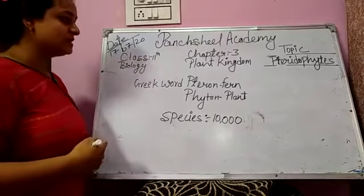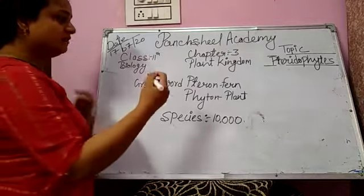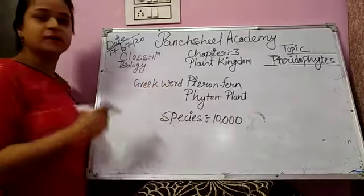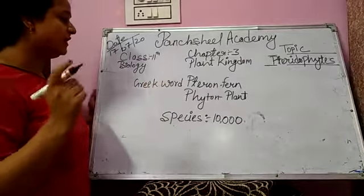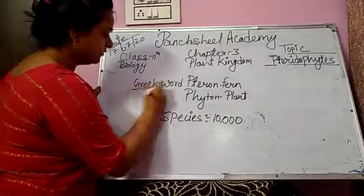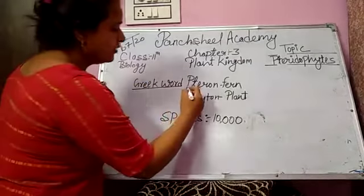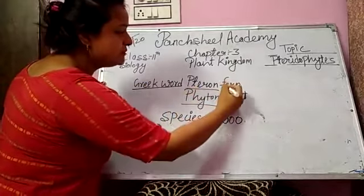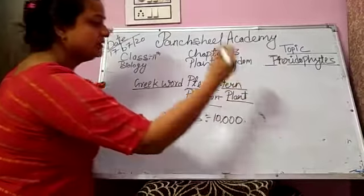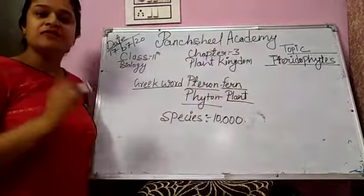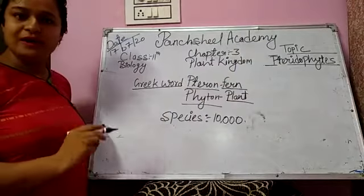In this class we start our topic that is Pteridophyta. Generally, Pteridophyta is a Greek word, which means Pterons and Phytons. Pterons means fern and Phytons means plant. That means fern-like plant is called Pteridophyta.